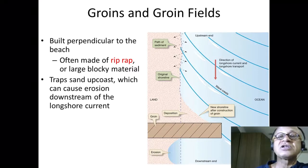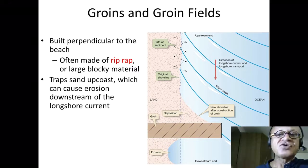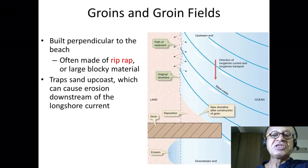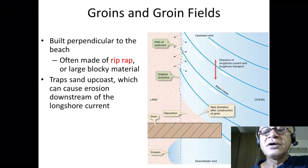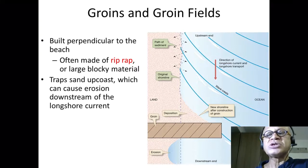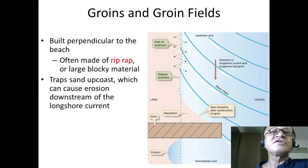Groins and groin fields — which are simply lines of groins — are built of a material called riprap and other large blocky material strong enough to withstand the force of water and waves. Remember we talked about waves coming in with a zigzag motion, with swash arriving at an angle and backwash coming straight down due to gravity, creating longshore transport and causing a net loss of sand.